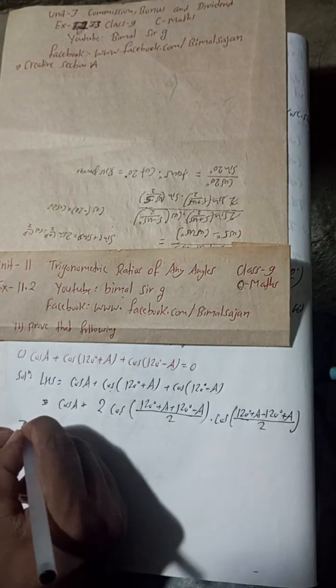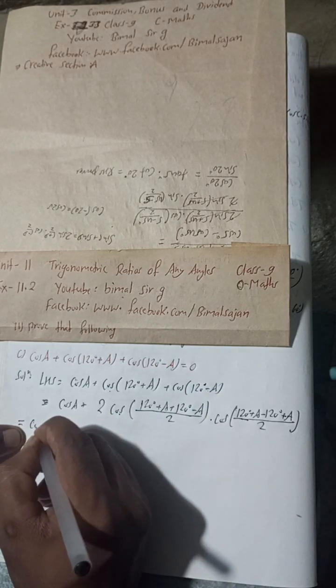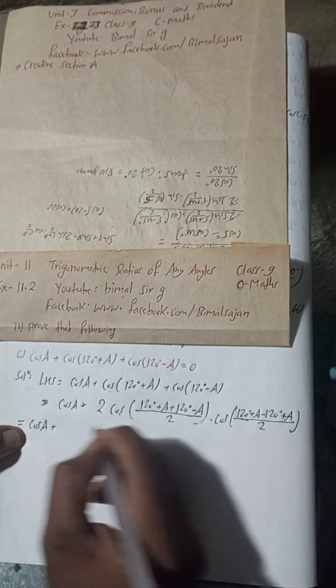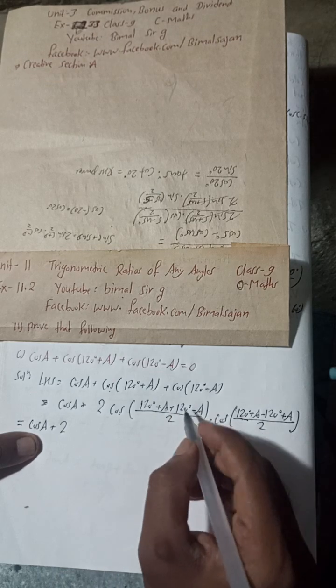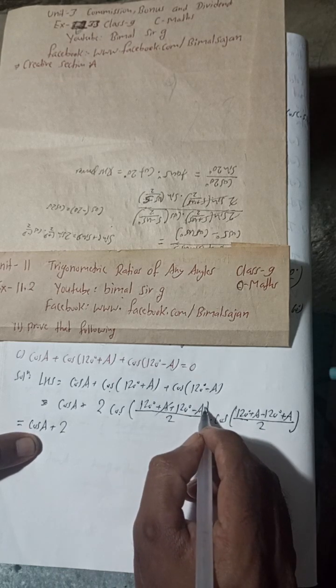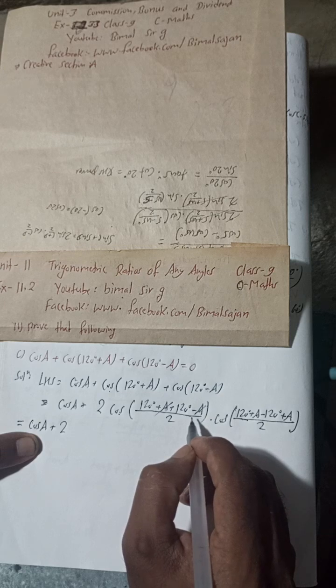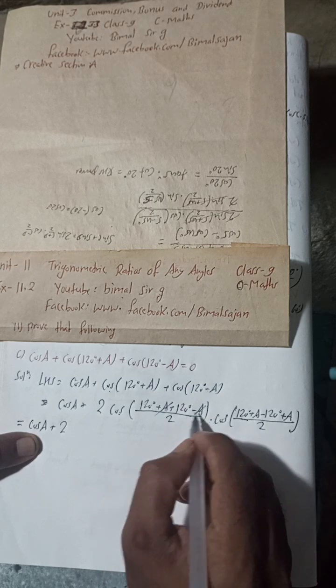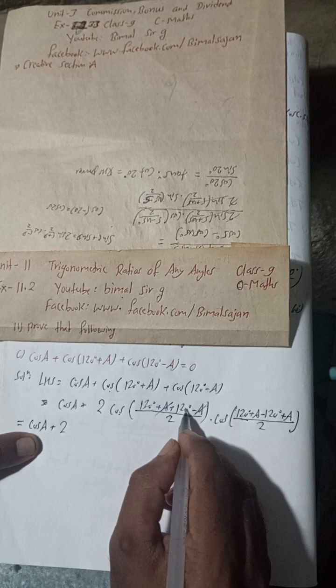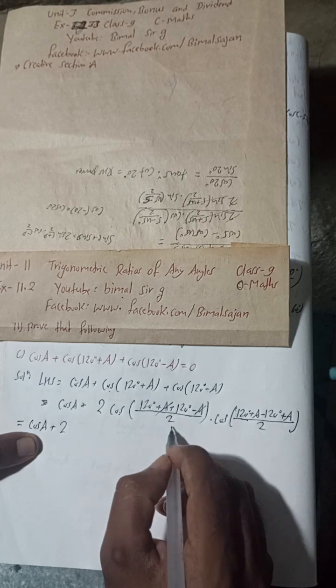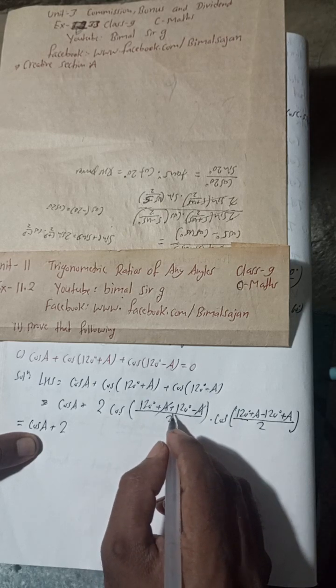Now here is equal to Cos A plus this is 2. And now see there, this is plus A minus A. Cancel. Now this is, now there is 120 plus 120. So this is 240. 240 divided by 2 is what? 120 only.